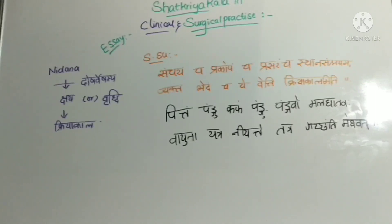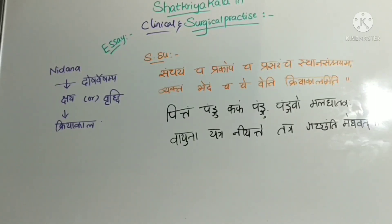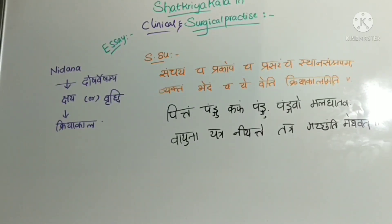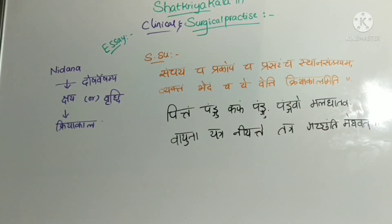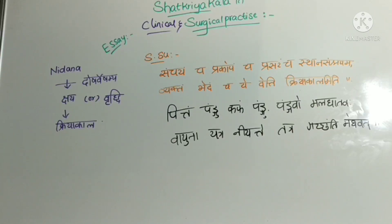To summarize the six stages: first is the stage of accumulation; second is the stage of aggravation; third is spreading or migration; fourth is the stage of localization; fifth is the stage of manifestation; and sixth is the stage of complications or differentiation — that is the final Bhedavastha.